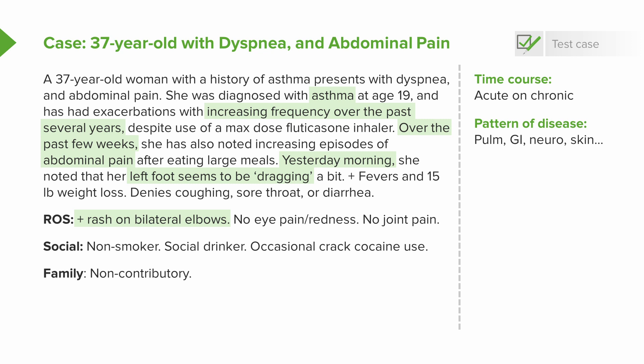Next up: the pattern of disease. We've got a lot of systems involved here — the lungs, abdominal pain suggesting a gastrointestinal issue, left foot drop suggesting a neurologic issue, and a rash on the elbows. Evidence of joint inflammation is not entirely clear; she's not highlighting any joint pain at the moment. And next: systemic involvement. The fevers and weight loss certainly make us think about systemic involvement, and she already has four or five systems involved just based on the HPI.